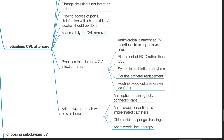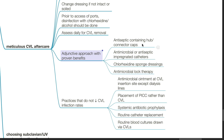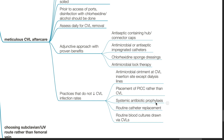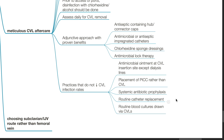Adjunctive approaches include antiseptic-containing hub or connector caps, antimicrobial or antiseptic-impregnated catheters, chlorhexidine sponge dressings, and antimicrobial lock therapy. Practices that do not decrease CVL infection rates include antimicrobial ointment at the CVL insertion site (except for dialysis lines), placement of PICC rather than CVL, systemic antibiotic prophylaxis, routine catheter replacement, and routine blood cultures drawn from CVLs.